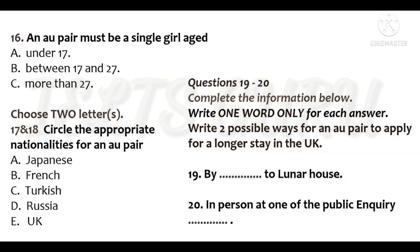An au pair who is a national of a country which is not in the Commonwealth or European Community, EC, and who is admitted for longer than six months will normally have to register with the police. This will be shown in her passport. She must take her passport and two passport-sized photographs to a police station. She will have to pay a fee, about £25.